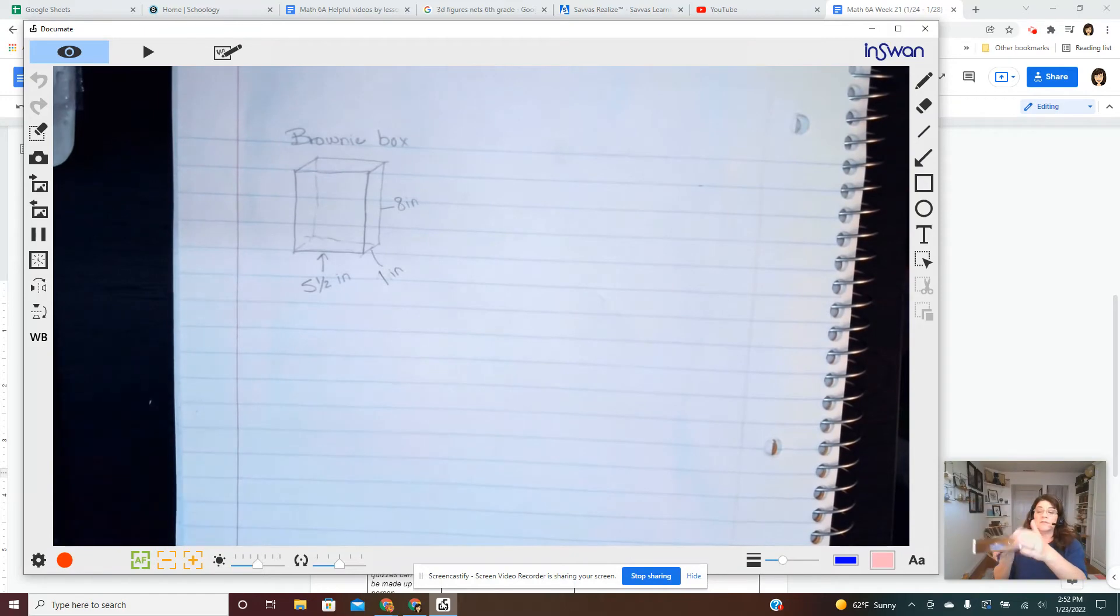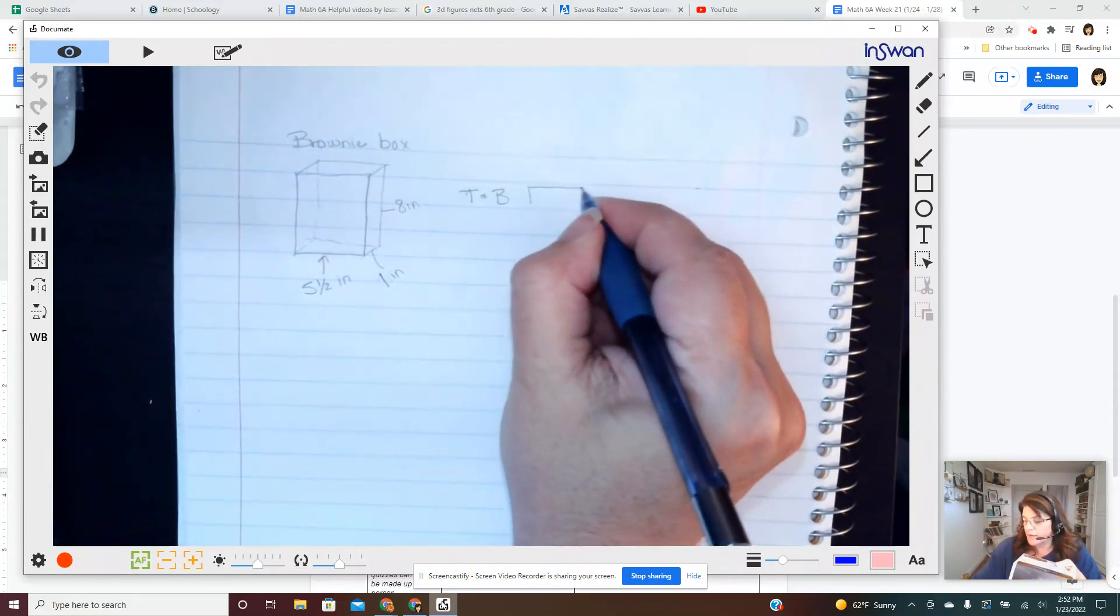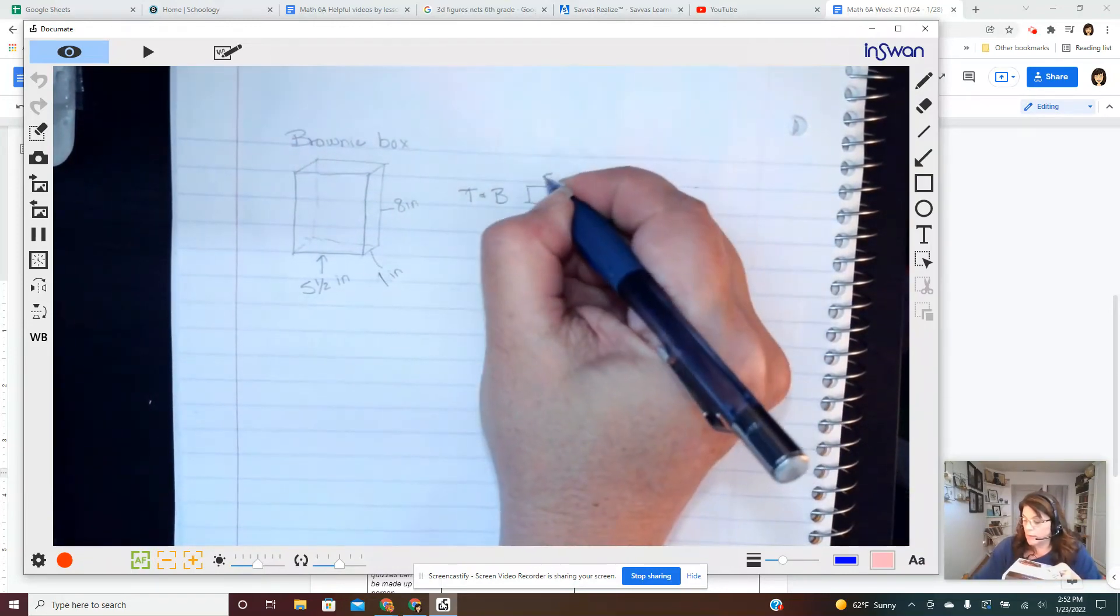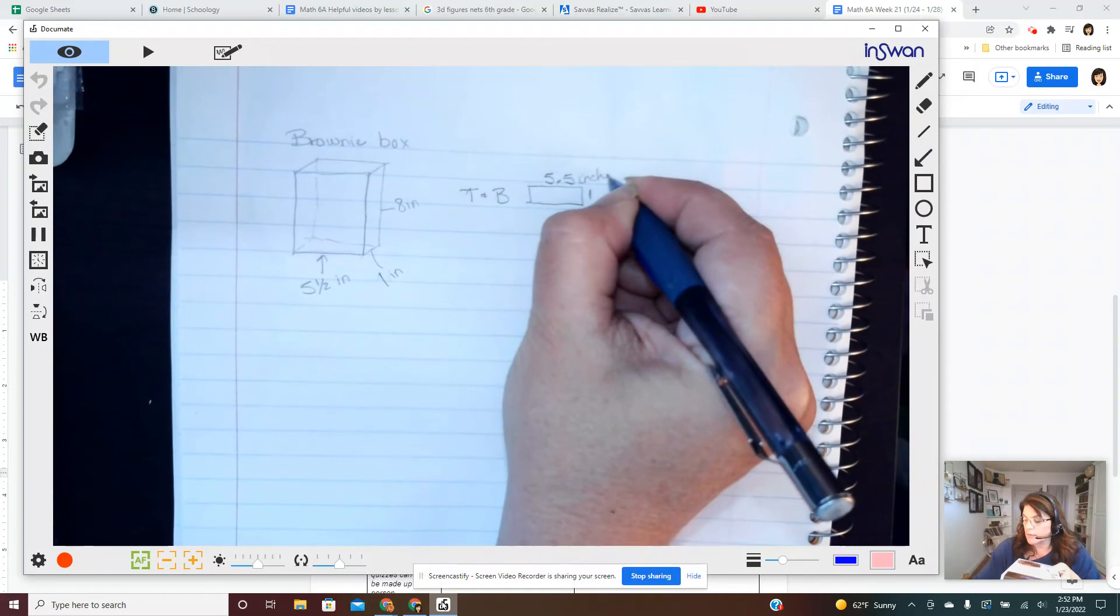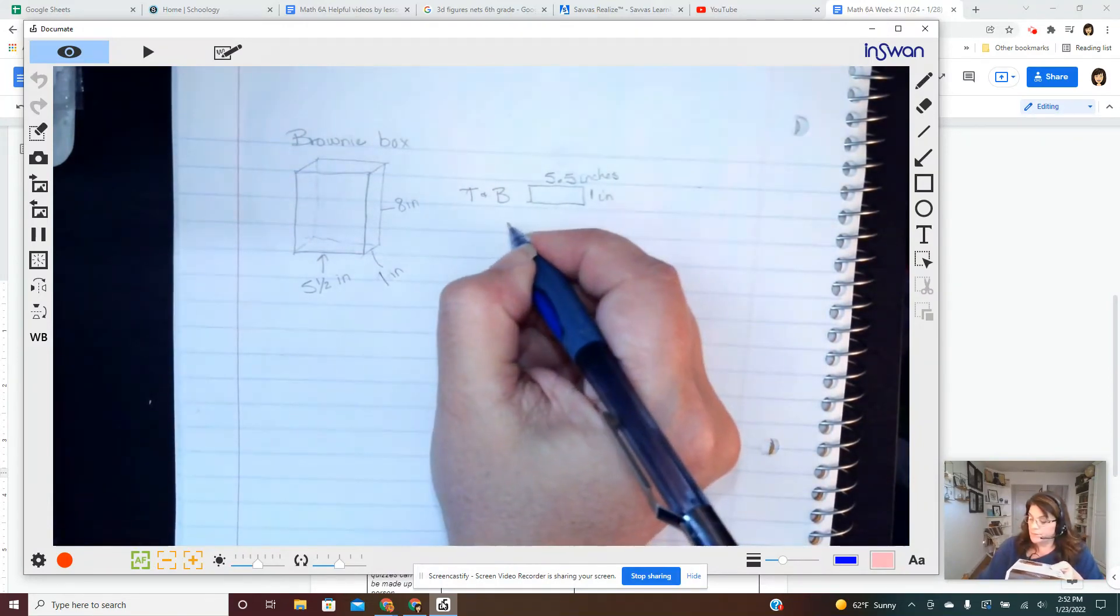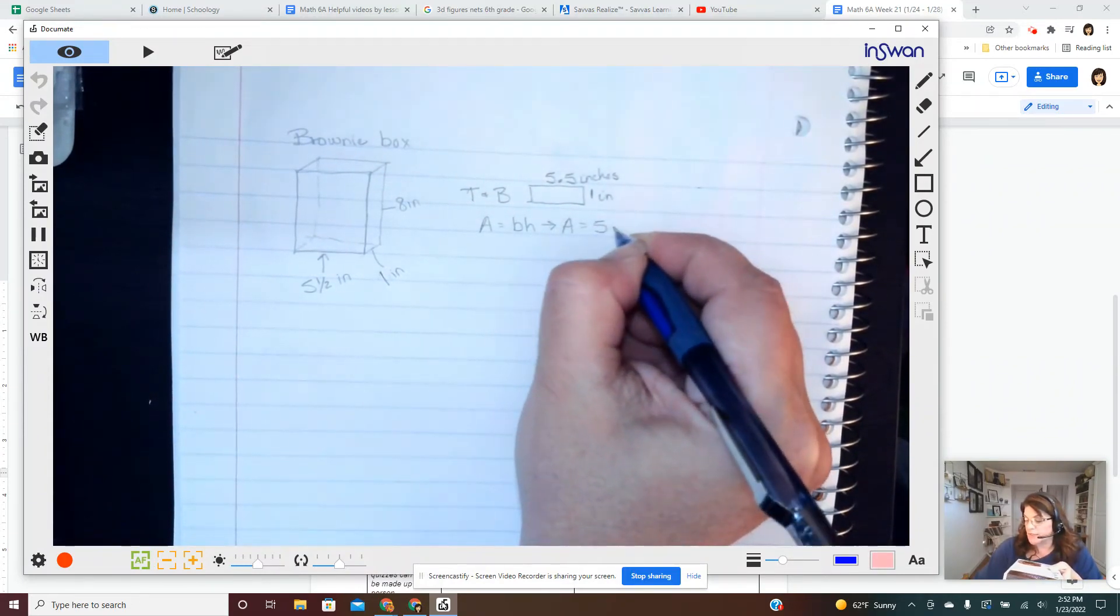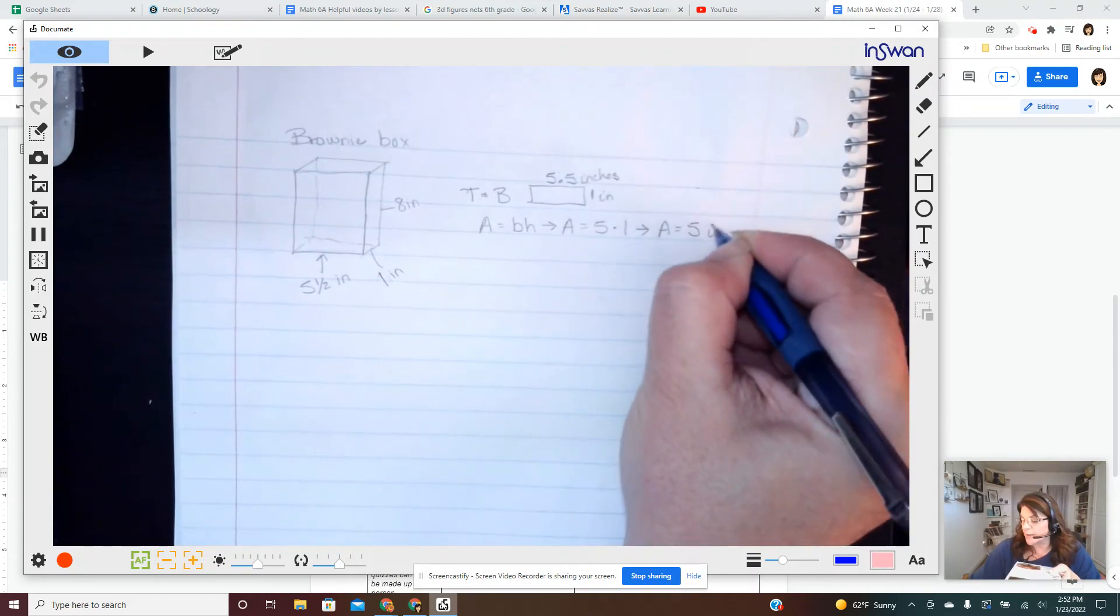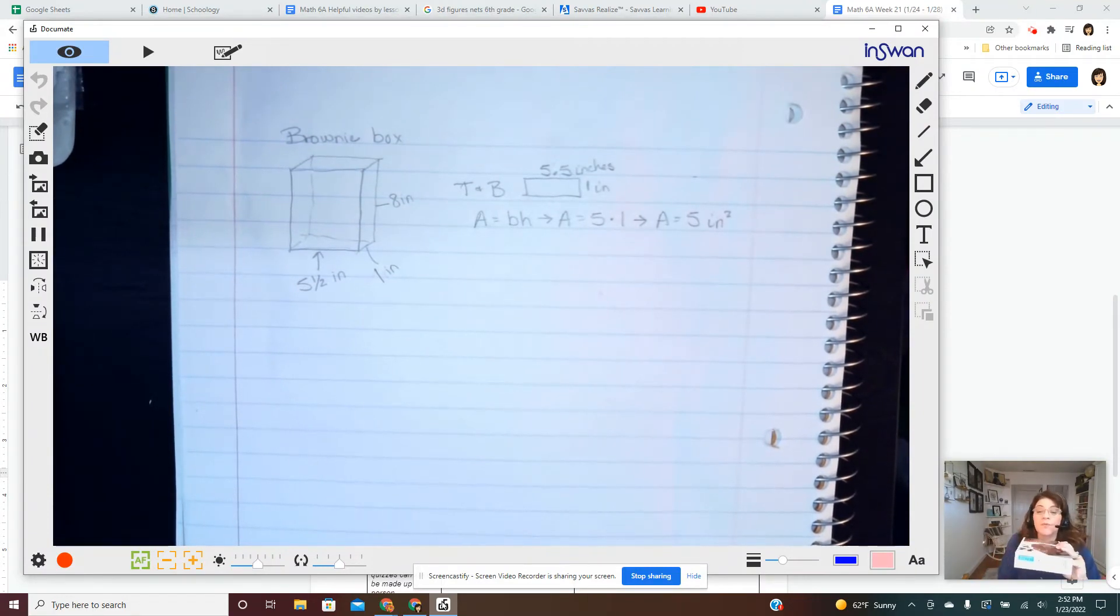And the width five and a half inches. You could write 5.5 decimal or fraction doesn't matter. But let's look at the box. It has a top, right? So the top and bottom are kind of this shape and I know it's one by five and a half. Area equals base times height. Area equals five times one. Area equals five square inches.